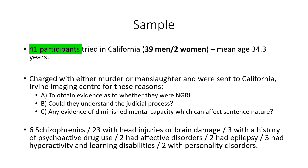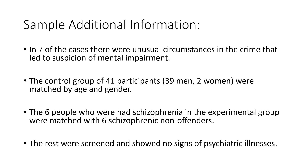Among the murderers there were six schizophrenics, 23 with head injuries or brain damage, three with a history of psychoactive drug use, two with affective disorders, two with epilepsy, three with hyperactivity and learning disabilities, and two with personality disorders. In seven cases there were unusual circumstances that led to suspicion of mental impairment. The control group of 41 participants — also 39 men and two women — were matched by age and gender. The six schizophrenic murderers were matched with six schizophrenic non-offenders, and the rest of the controls showed no signs of psychiatric illness.